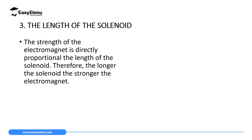The third factor that affects the strength of an electromagnet is the length of the solenoid. The strength of an electromagnet is directly proportional to the length of the solenoid. Therefore, the longer the solenoid, the stronger the electromagnet. You should note that we should keep other things constant: the length of the material we're going to use should be constant, the amount of current should be constant, and the number of turns should be constant, for you to consider the length of the solenoid as a factor.